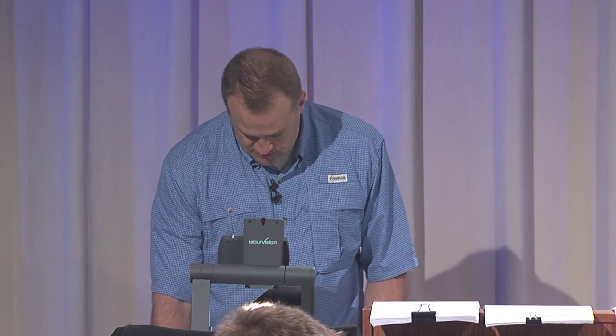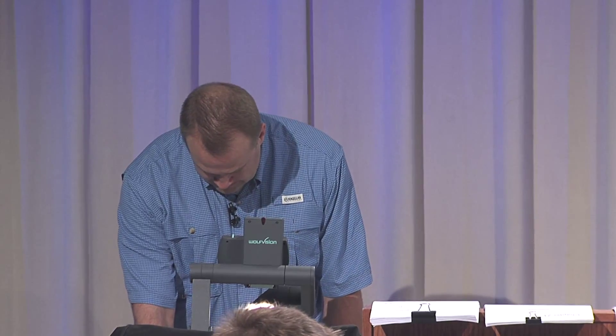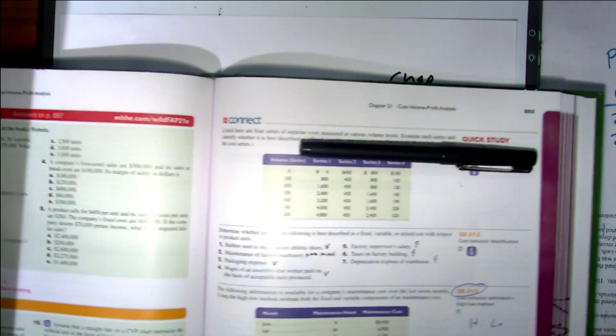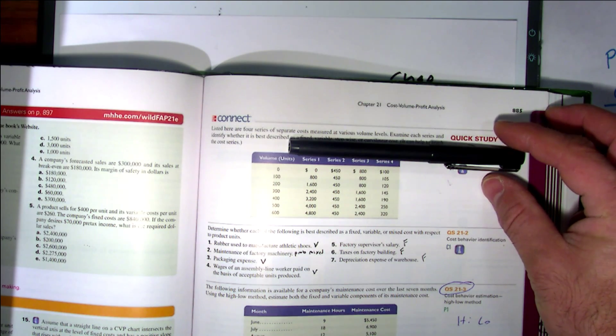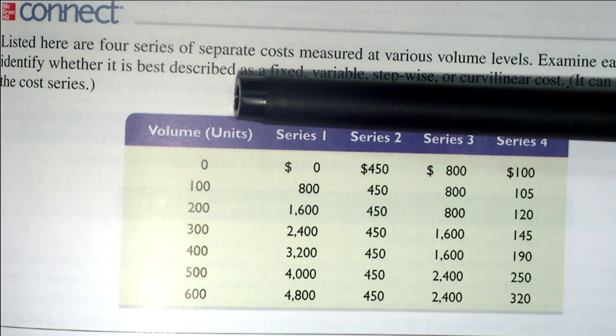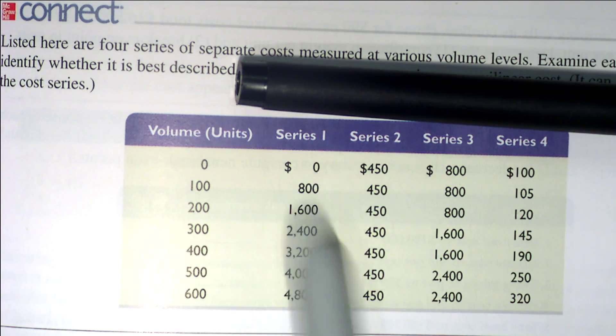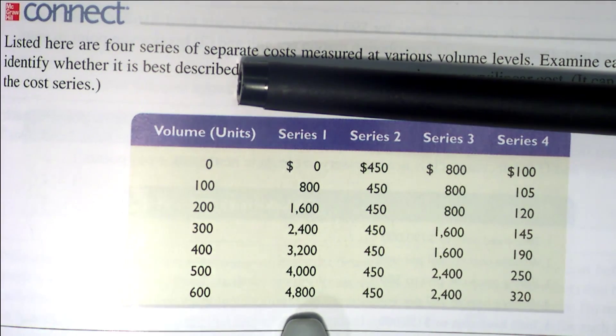Let's go over chapter 21 homework real quick. I assigned a few things. Quick Study 21-1: listed here are four series of costs measured at various volume levels. Examine each series and identify whether it is best described as a fixed, variable, stepwise, or curvilinear cost. Here's the volume and here are the costs for each series. Series one would best be described as what?